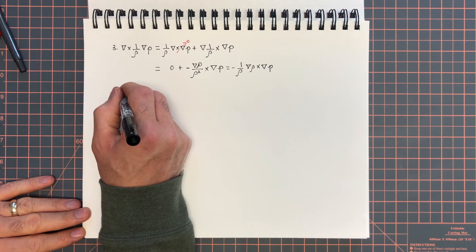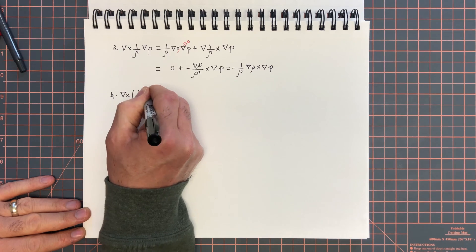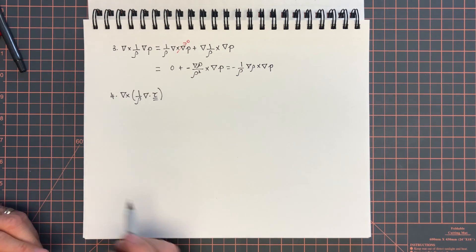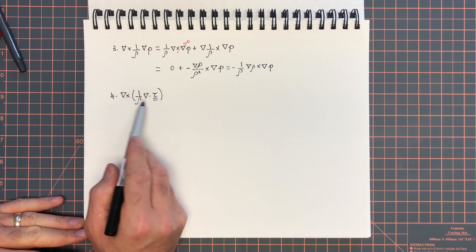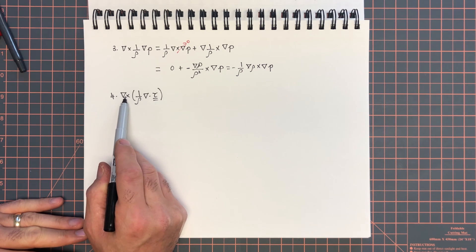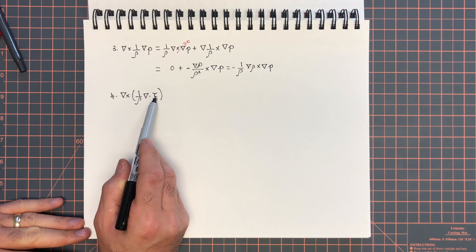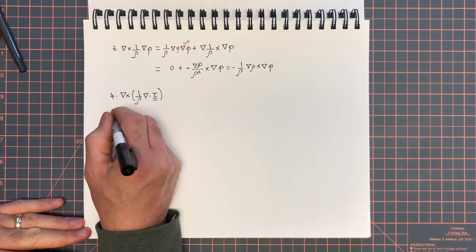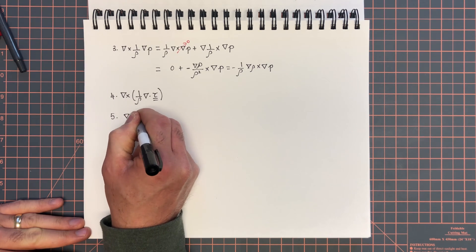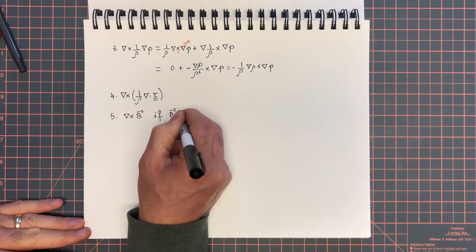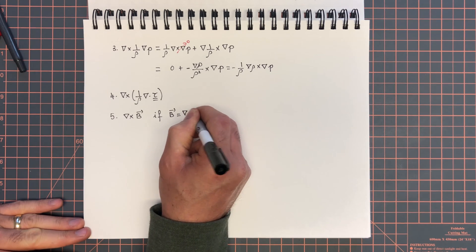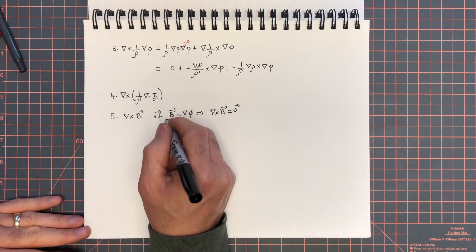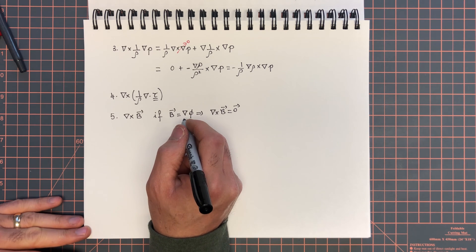For the viscous term, we have the curl of 1 over rho div tau. We're going to leave that term untouched, because that's just going to describe the diffusion of vorticity. When in certain cases we can distribute the curl inside, such as when we go to the constant density case, then we're going to see that this is going to describe the diffusion of vorticity. And finally, for the body forces, curl B, if B is a conservative force, such as gravity, then curl B is 0. Only if that's the case.